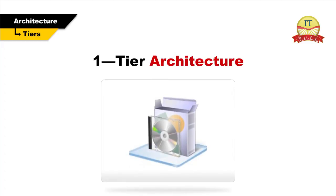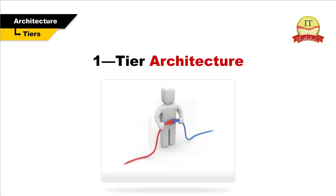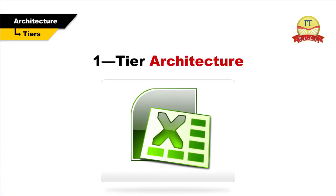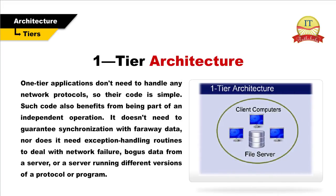One-tier architecture: A one-tier application is simply a program that does not need to access the network while running. Most simple desktop applications like word processors or compilers fall into this category. One-tier applications don't need to handle any network protocols, so their code is simple. Such code also benefits from being part of an independent operation. It does not need to guarantee synchronization with faraway data, nor does it need exception handling routines to deal with network failure, bogus data from a server or a server running different versions of a protocol or program.